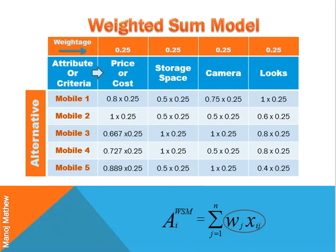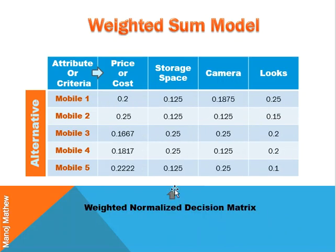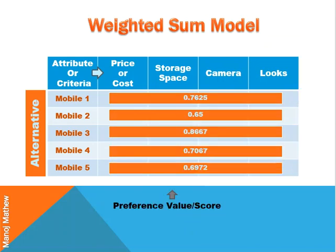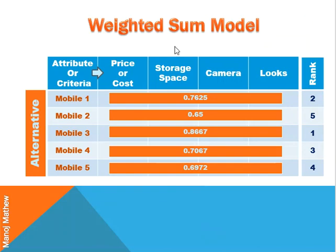Next, we sum up or add all the values in each cell and we get a preference score. Each mobile will have a preference score based on which we can rank them. Here we can see that Mobile 3 is the best alternative based on the rank and the preference score.